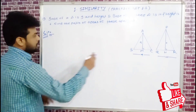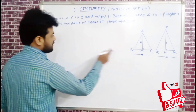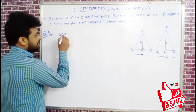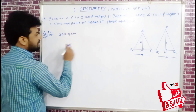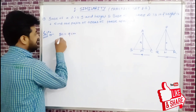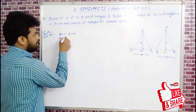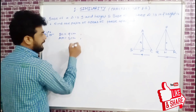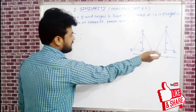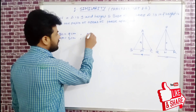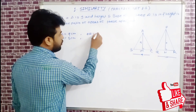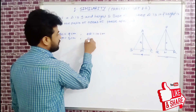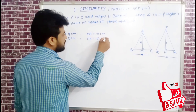In the first triangle, base BC = 9 cm and height AM = 5 cm. In the second triangle, base QR = 10 cm and height PL = 6 cm.